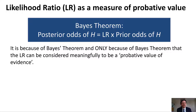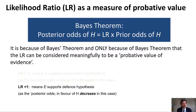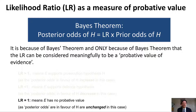It's because of Bayes' theorem — and only because of Bayes' theorem — that the likelihood ratio can be considered meaningfully to measure the probative value of evidence. Suppose H is the prosecution hypothesis, so not H is the defense hypothesis. Then a likelihood ratio greater than 1 means E supports H, and the bigger it is, the more it supports H, because the posterior odds must be greater than the prior odds. A likelihood ratio less than 1 means the evidence supports the defense hypothesis — the posterior odds in favor of H must decrease. A likelihood ratio of 1 means the evidence has no probative value at all, because the posterior odds are unchanged and your belief in H is unchanged.